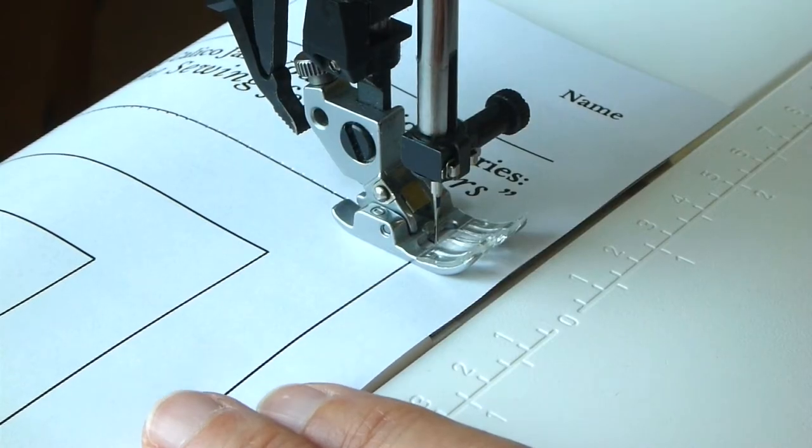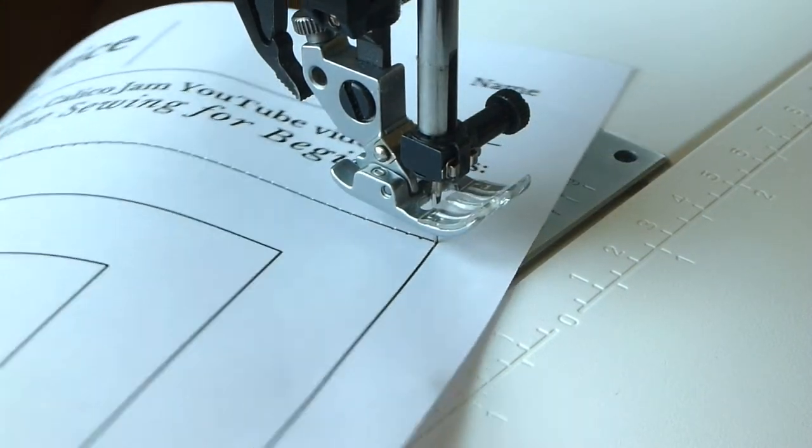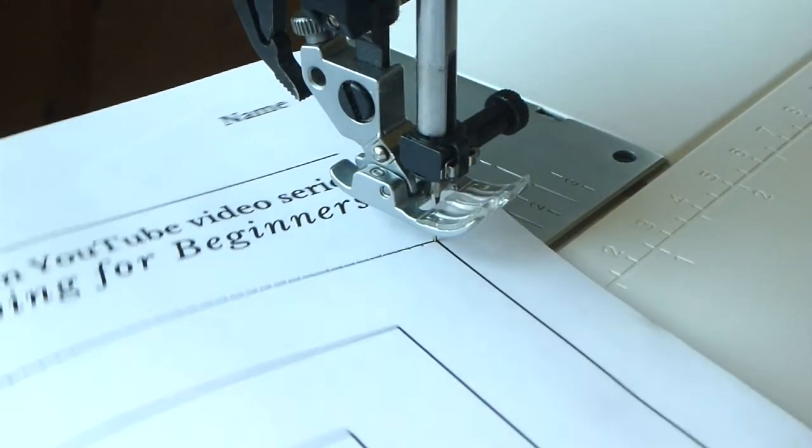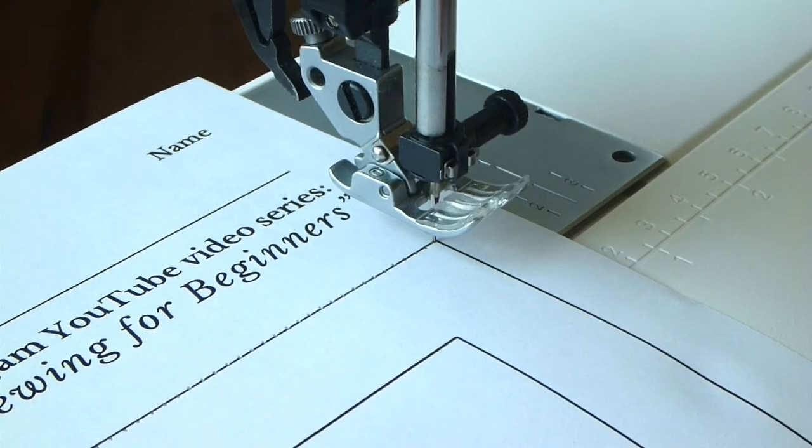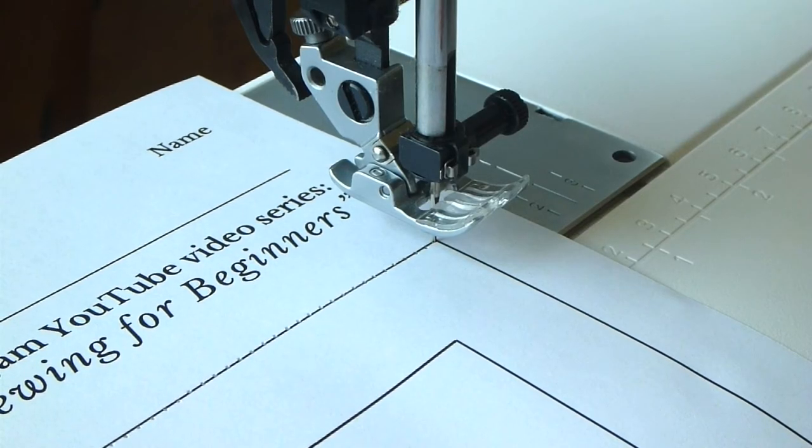Leaving the needle down in the paper, lift the presser foot up. Now rotate the paper to make the turn. It is very important that the needle is down in the paper before lifting the presser foot up, so the paper doesn't slide around while you are turning it.